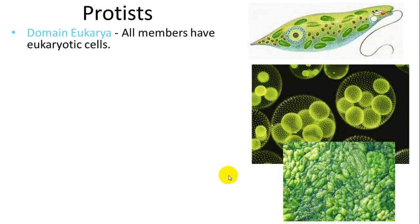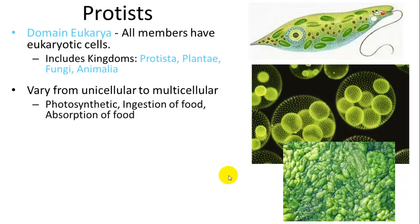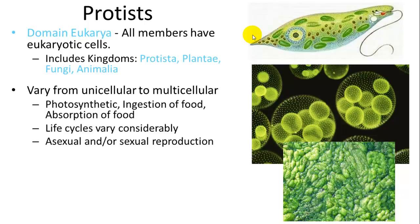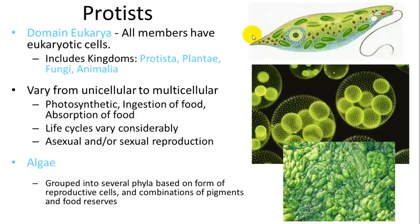Protists are from the domain Eukarya, so they're eukaryotes, which includes animals, plants, and fungi. They can be unicellular and multicellular — here's a colonial form called Volvox, and a single-celled form, Paramecium. Some of them can photosynthesize, some have to ingest their food, and some can do both. Their life cycles can be asexual, sexual, or both. There are several groups of algae including green algae, red algae, and brown algae — most are multicellular, some are unicellular — and they differ based on their chlorophyll, other pigments, and their food reserves.